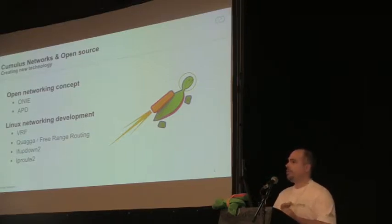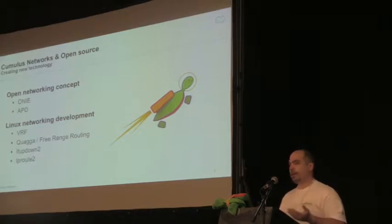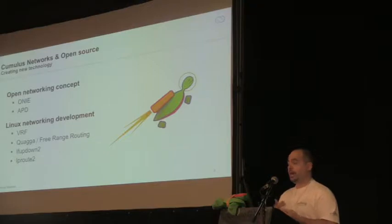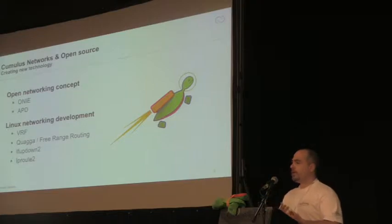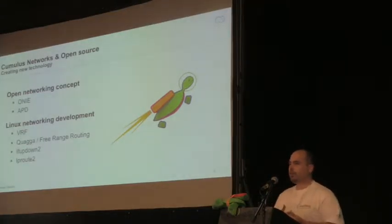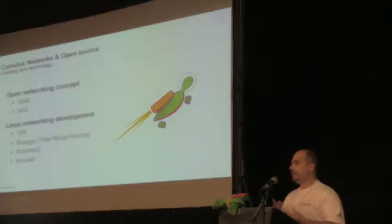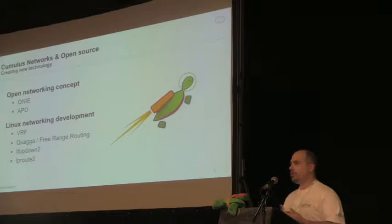One of the examples is the bootloader on white box switches. The de facto standard right now is ONIE, which was developed by Cumulus and is now managed by OCP. You can find it on basically every white box that is out there. Another example is Linux networking development itself — VRF support in the Linux kernel.